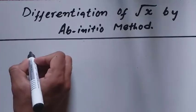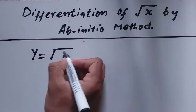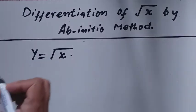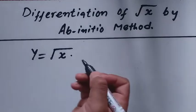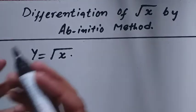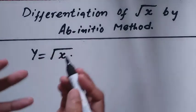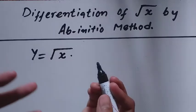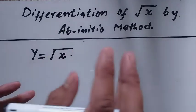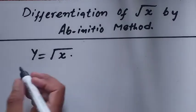Suppose we have a function y equal to under root x. As you know, we can differentiate this directly, but we are going to prove this. We can find its derivative by ab-initio method, or we can say by first principle. Now let's begin.